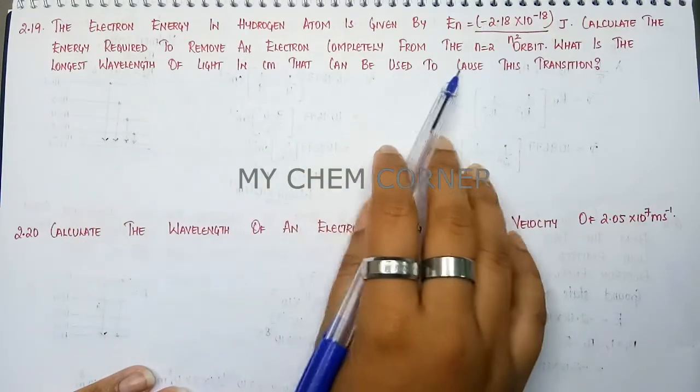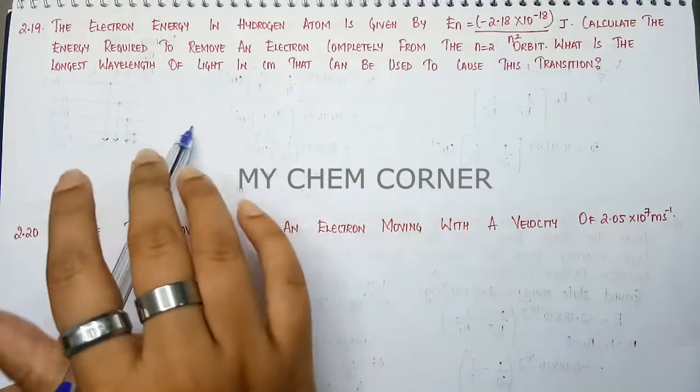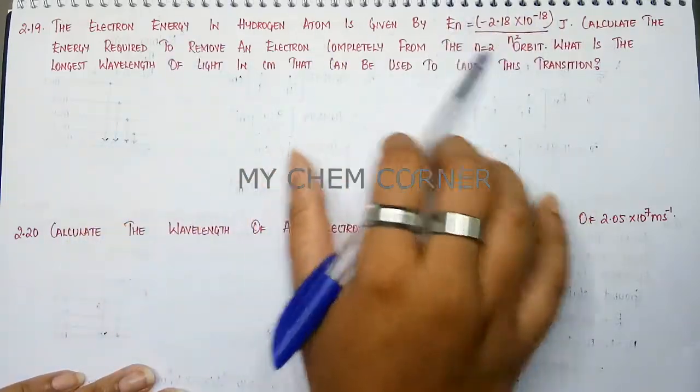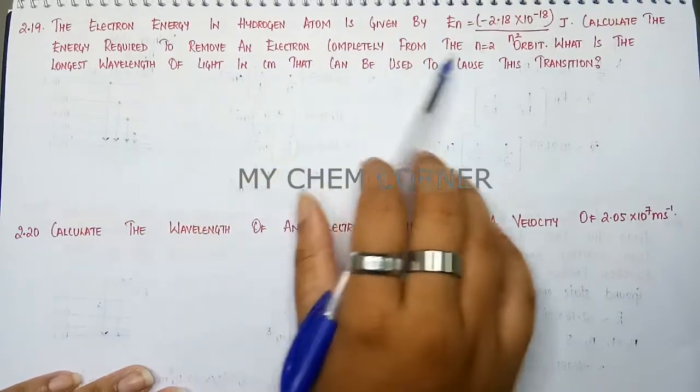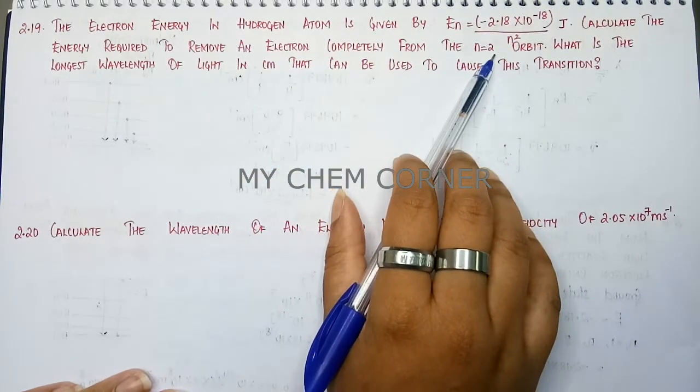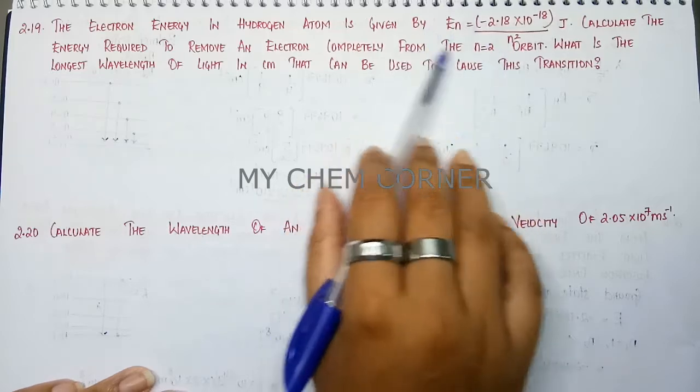So in this, it's a simple thing. You need to find out what is the energy by using this given formula. When you want to remove an electron completely from N equals 2 orbit, then once you find out that using that energy,